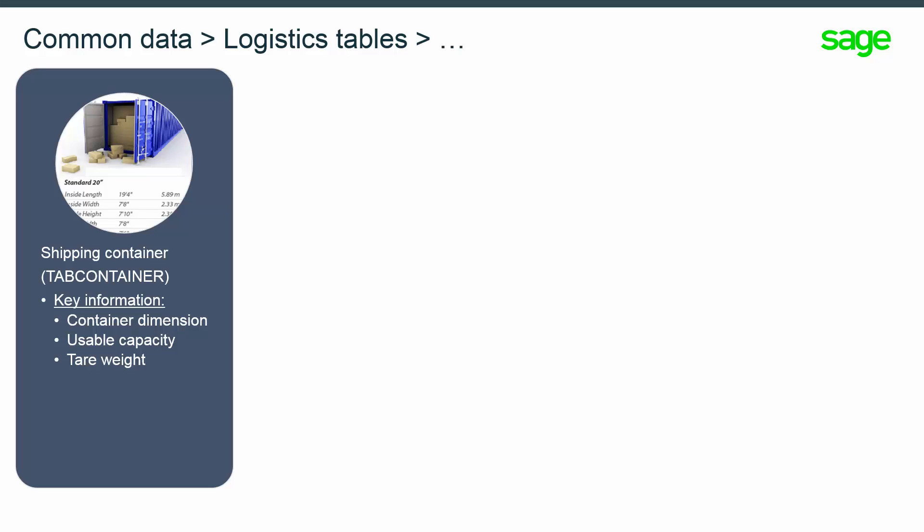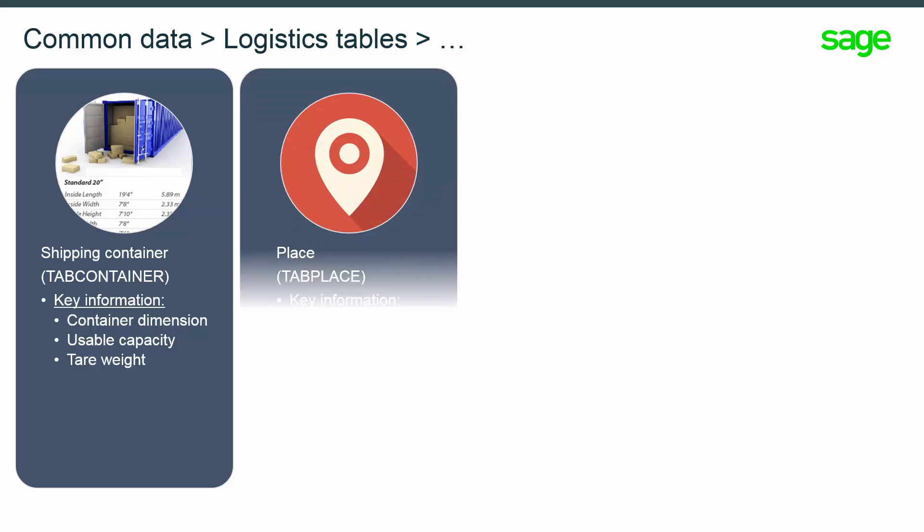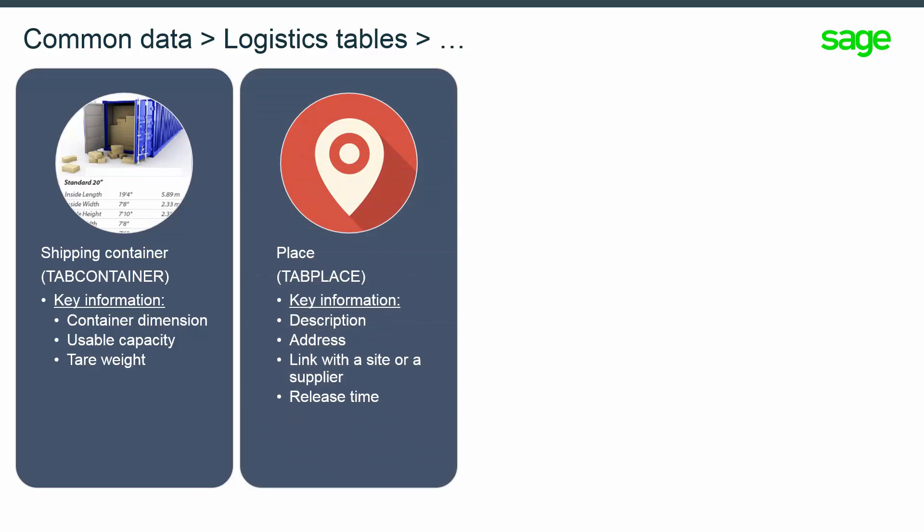In order to control the container capacity, this information is mandatory. You also define the place function, which allows you to define a physical location with an address. Such places can only be a departure, arrival, or receipt site in the transportation journey. When a place is linked to a site or a supplier record, the related address is defaulted. You can enter a release time in days, which will be accumulated to the transport lead time in the arrival date calculation of the shipment. This can be useful when considering time needed to go through customs, for example.